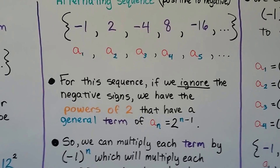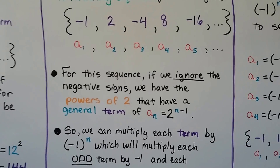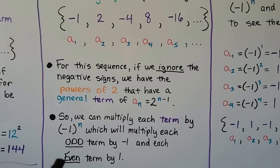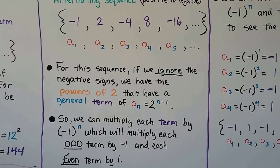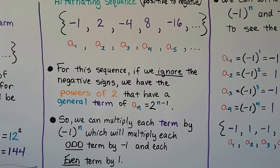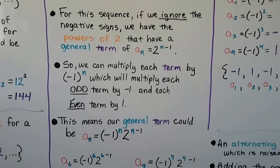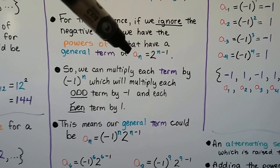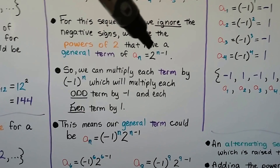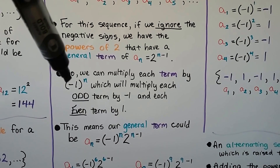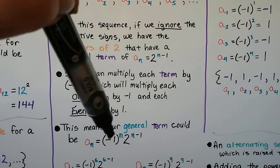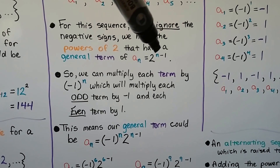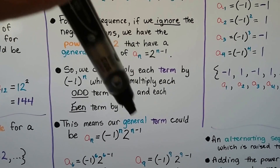We can multiply each term by negative one to the nth power, which will multiply each odd term by a negative one and each even term by a one. This means our general term could be: a sub n equals negative one to the nth power, times two to the n minus one power.